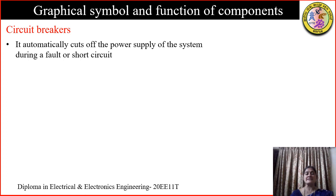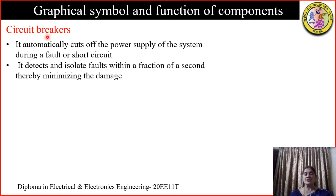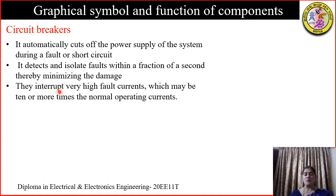Next, we have a circuit breaker. The function of a circuit breaker is to automatically cut off the supply of the system during a fault or short circuit condition. The circuit breaker operates under load condition when load current is flowing and operates only when a fault has occurred. The job of the circuit breaker is to detect and isolate the fault as soon as possible so that damage doesn't spread to the power system. Circuit breakers are designed to interrupt very high fault currents, which may be more than 10 times the normal current, causing sparking or arcing.